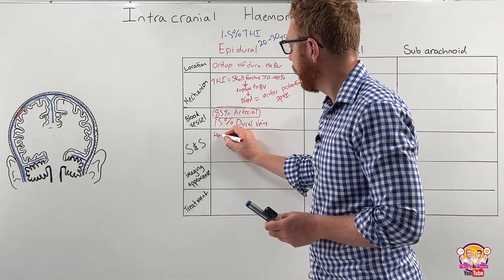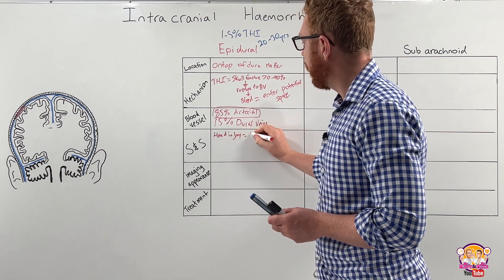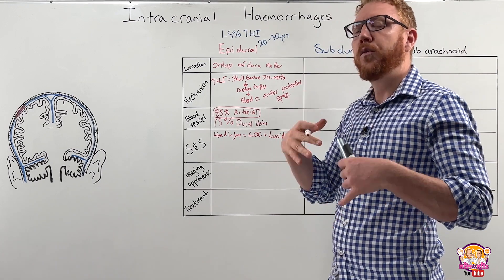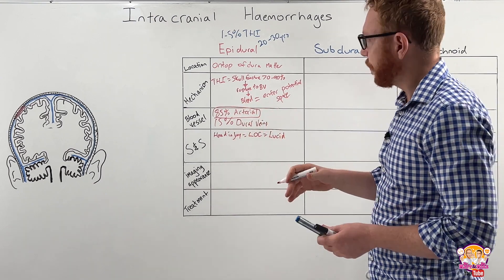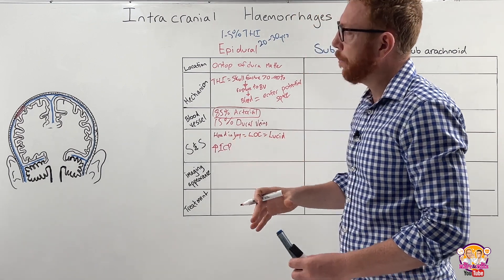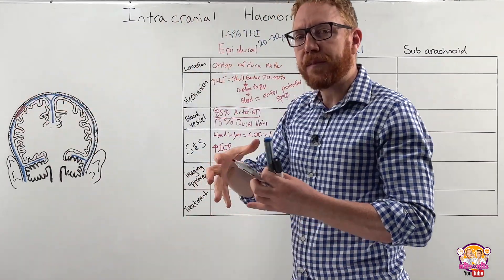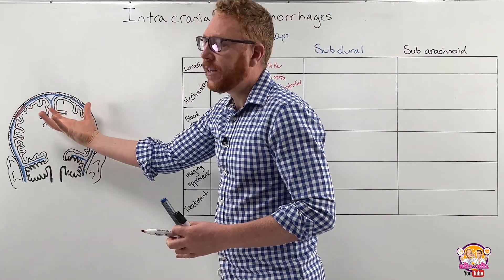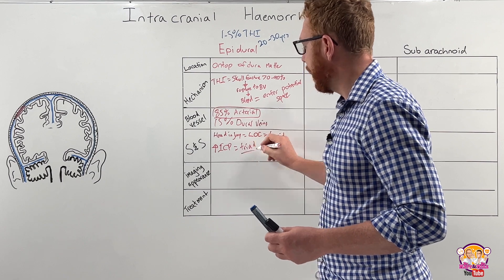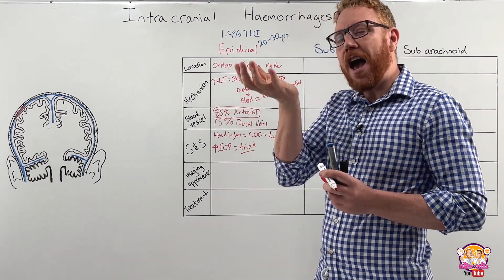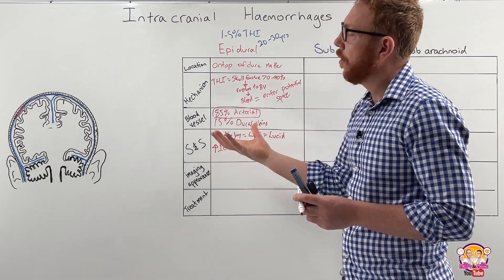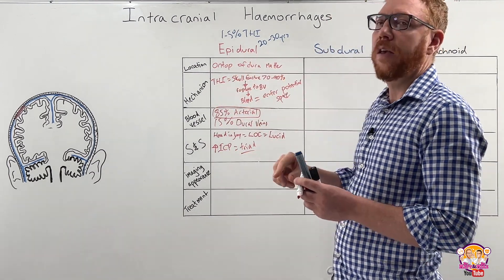So the symptoms that we would see: generally with the head injury, we would see a loss of consciousness, and then in about 50% of cases, there's going to be a lucid period where the person regains consciousness and is aware of their surroundings. As the bleed starts to get bigger, we get an increase in intracranial pressure. This is going to lead to what we call a triad, which means three things: high blood pressure, a drop in heart rate and irregular respiratory rate. That's a classic intracranial pressure increase, which is classic epidural bleed symptoms.